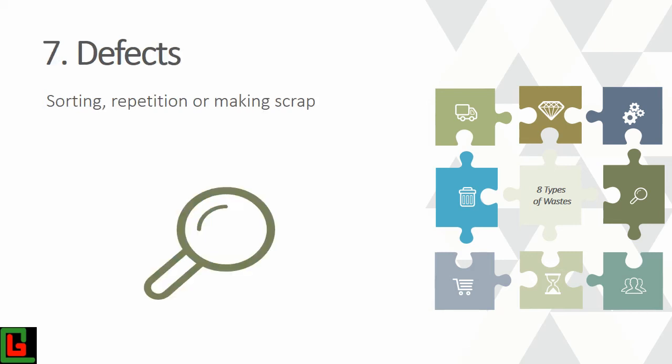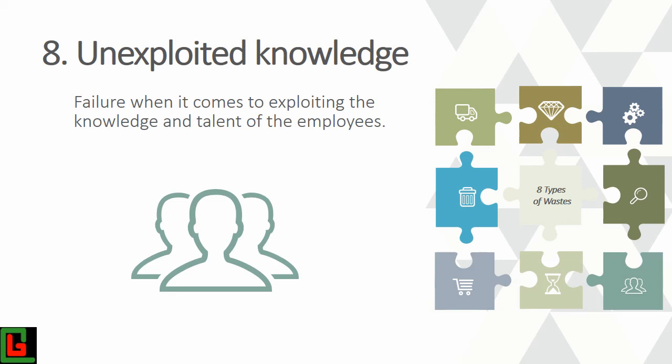The seventh waste is defects — whether from process problems or human error, defects require rework, which wastes time and effort. If a defect is beyond repair, the product must be discarded. If defects pass unnoticed to the client, you end up with an unsatisfied customer. Conventionally, the acronym for the seven wastes was TIM WOOD.